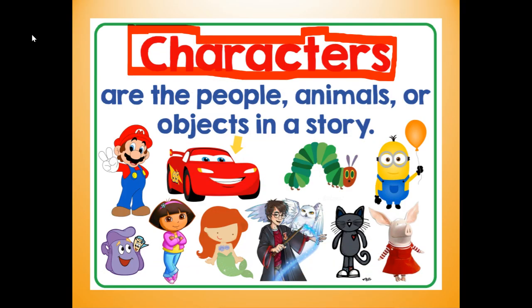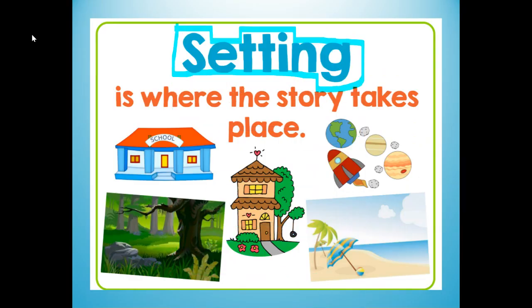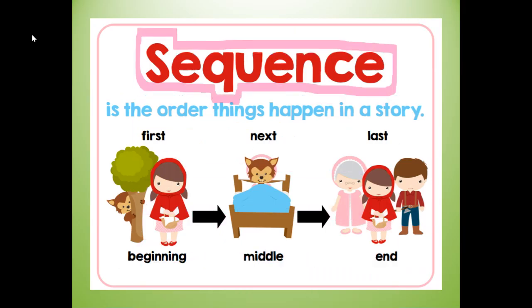Characters — what are characters? Characters are the people, animals, or objects in a story. Setting — what is a setting? Setting is where the story takes place. Sequence — what is sequence? Sequence is the order things happen in a story. For example, you're going to write these sequence words: first, next, and last, or beginning, middle, and end of the story.